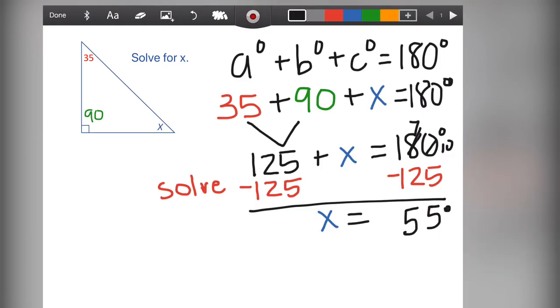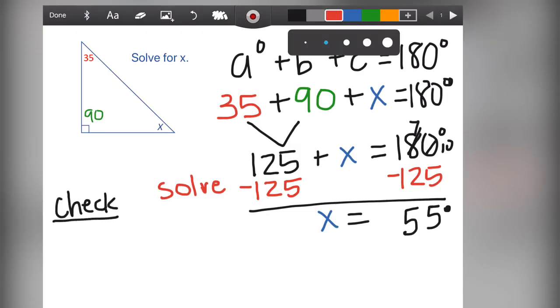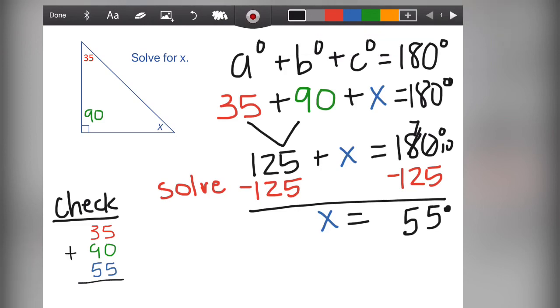Again, let's check our work. Let's look at the three angle measurements that we have. The 35, the 90, and our new value of 55 for X. We will add them up and find if they total 180. If they do total 180, again, we did our problem correct. We have our correct answer and we were successful today. Thank you so much for joining us.